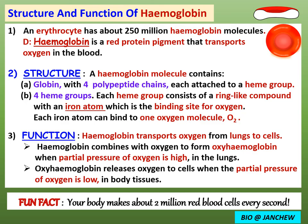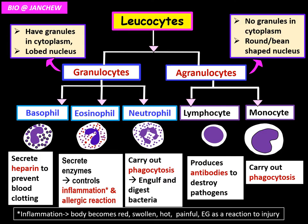Here are the notes on the structure and function of hemoglobin. A hemoglobin molecule contains the protein globin with four polypeptide chains, each attached to a haem group. A haem group is a ring-like compound with an iron atom — the binding site for oxygen — and each iron atom can bind to one O₂ molecule. Fun fact: your body makes about 2 million red blood cells every second.